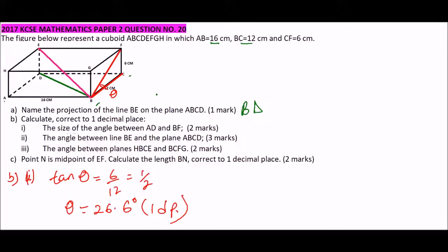The second part is the angle between BE. This is where we have BE and the plane ABCD. So this is the angle that you need to work out. So we can call that theta 1. And we need to get the range of BD. Since we know this is also 12 centimeters, BD is a diagonal.